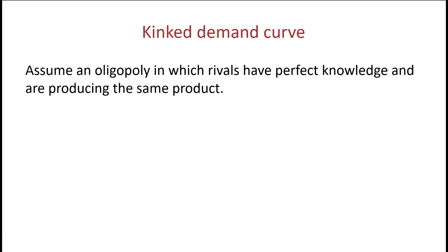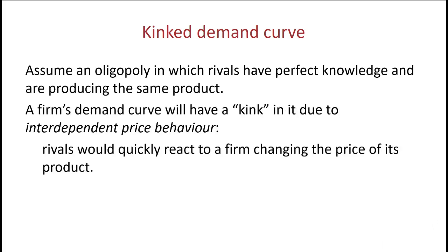We're going to assume that we're dealing with an oligopoly — a few dominant firms in the market — and the firms possess perfect knowledge and are producing the same product. A firm's demand curve, or as we now know it, its average revenue curve, will have a kink in it due to the interdependent price behaviour of the different firms in the marketplace. That is, rivals will react quickly to any given firm changing the price of its product.